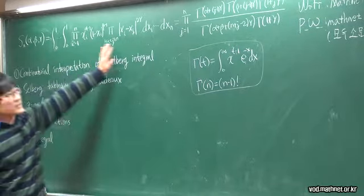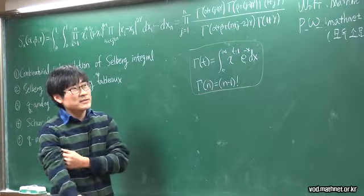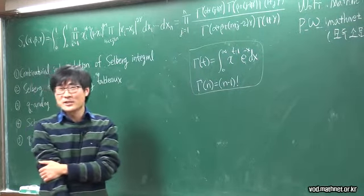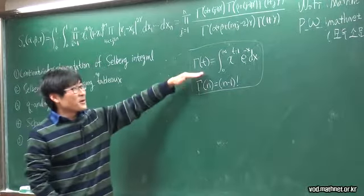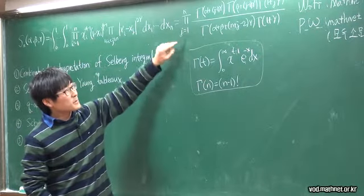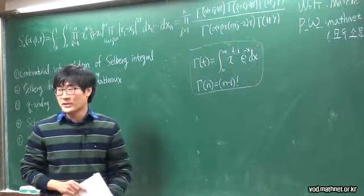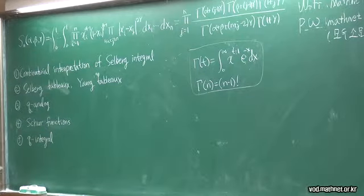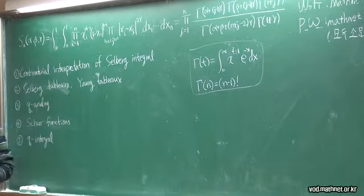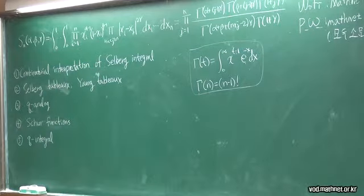The Selberg integral is a multiple integral with a nice product formula involving gamma functions. I gave a talk on this last week and some audience members asked what the gamma function is — I had to look it up on Wikipedia. The key thing to remember is that when the arguments are integers, the gamma function is essentially a factorial. So since we're doing counting, all you need to remember is that these exponents correspond to factorials.